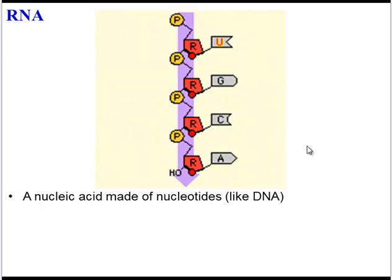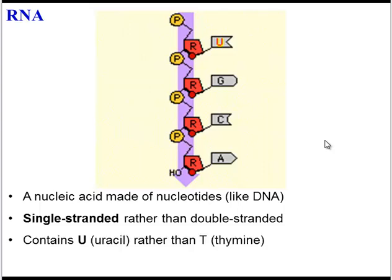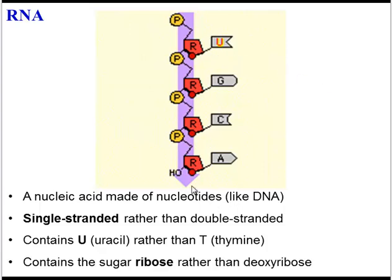However, there are some important differences between RNA and DNA. The most obvious is that RNA is single-stranded rather than double-stranded. A second difference is that RNA does not contain the T base; instead, it contains the U base. RNA follows the same complementary base pairing rules, but any time it sees an A, it's going to use a U to pair up. The final difference is the sugar: DNA has deoxyribose, but RNA has ribose.